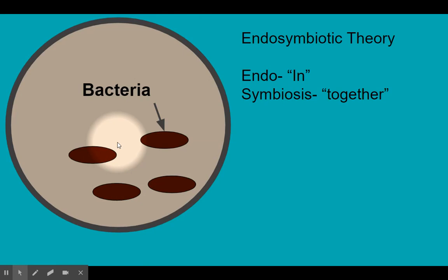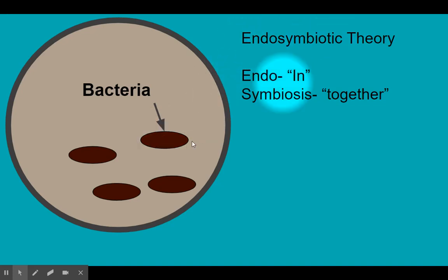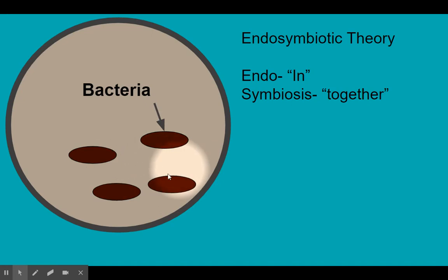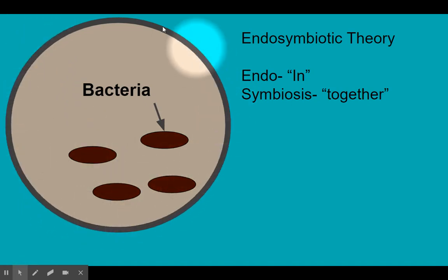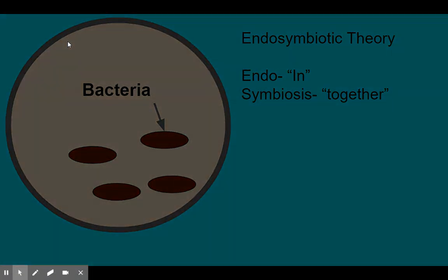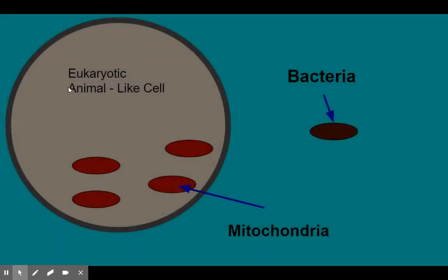A bacteria is a prokaryote. A prokaryote is not going to have a nucleus; it is not going to have membrane-bound organelles. However, it is going to have its own DNA and its own ribosomes. The endosymbiotic theory shows, with strong evidence, that bacteria living symbiotically together are collectively going to give rise to a eukaryotic cell — a cell that has a nucleus and membrane-bound organelles.